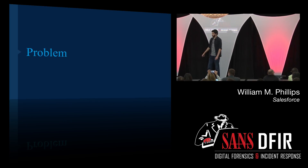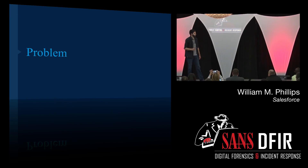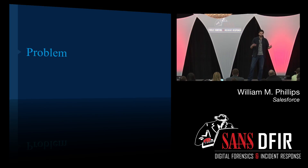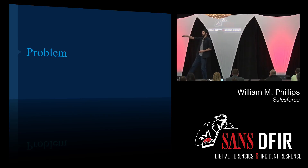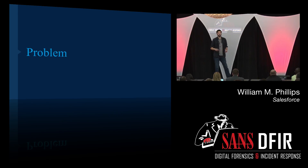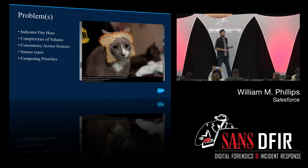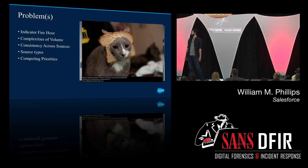Next on the list of problems is consistency across sources. How many of you have blocked Google? The indicators come in, you know it's a good source, you're excited about them, and then all of a sudden you block Google. That has happened to us. In addition to that, you've got to deal with all the source types — atomic indicators like IPs, hashes, certs — and then behavioral indicators coming in as well, like they should be hitting this IP with this cert for it to be bad, otherwise it's good.